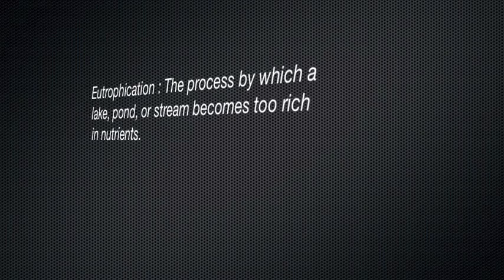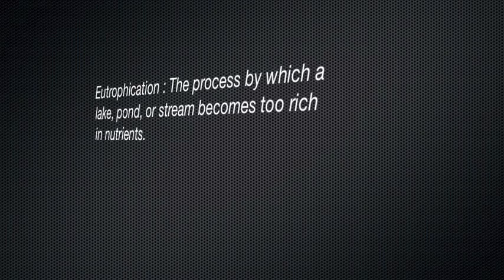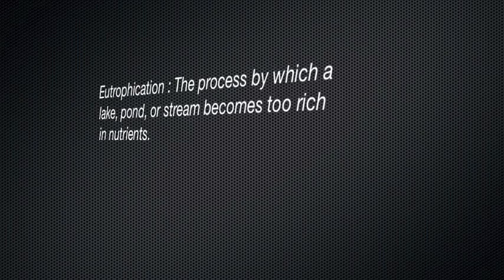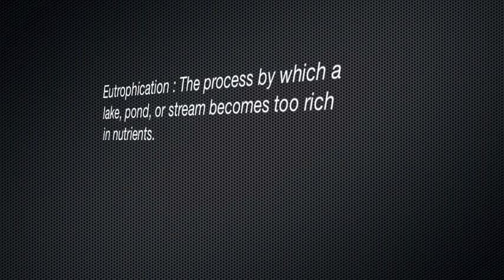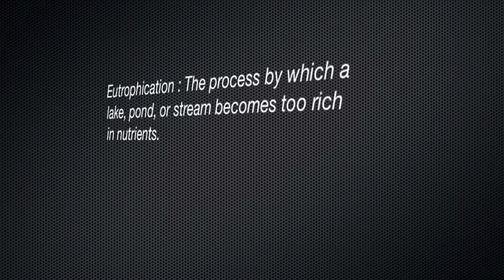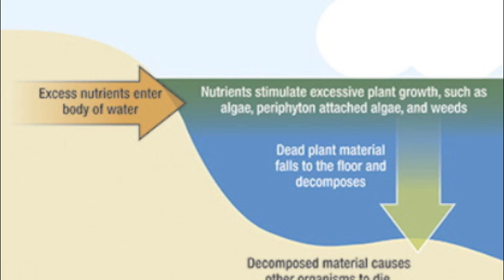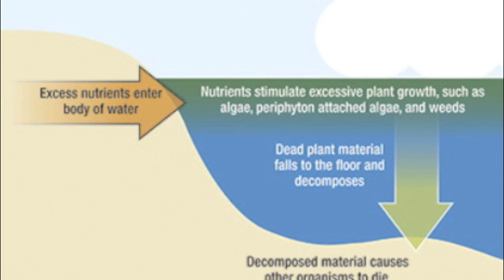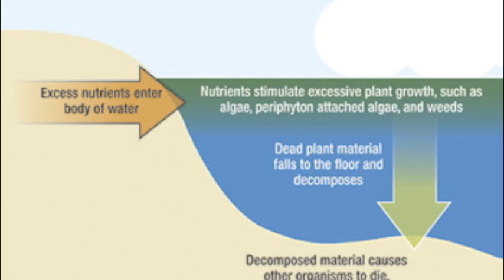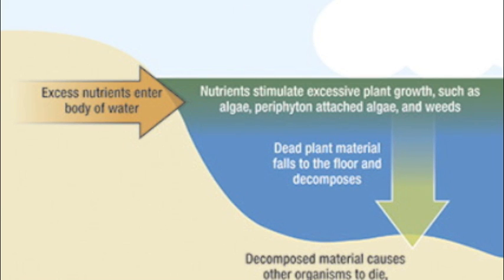Eutrophication is the process by which a lake, pond or stream becomes too rich in nutrients. Nutrients such as phosphorus contained in fertilizers stimulate excessive plant growth, causing plants to grow faster and take more oxygen from the water.